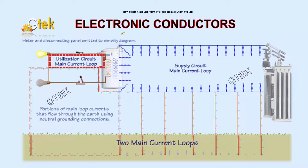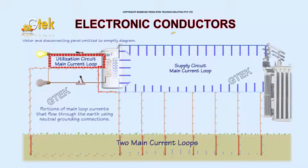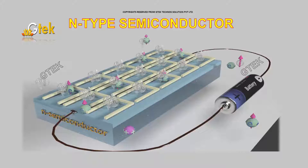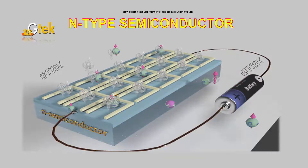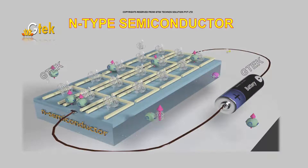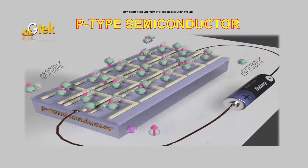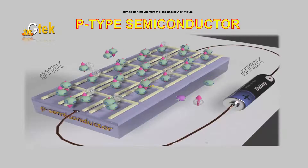We are going to look into the electronic conductors and how they occur. And we are going to look further into the N-type semiconductor — how N-type semiconductors are used in generating electricity and also in circuit designing. And this is your P-type semiconductor — how the movement of holes and electrons is happening.